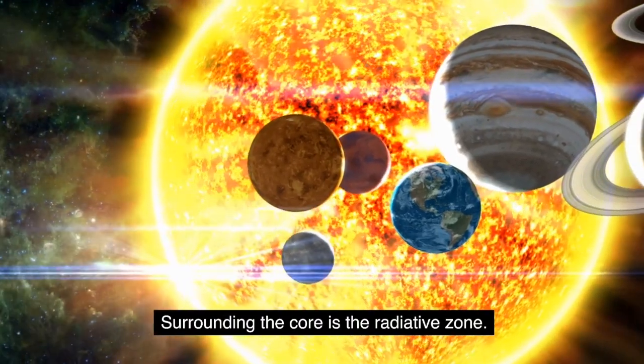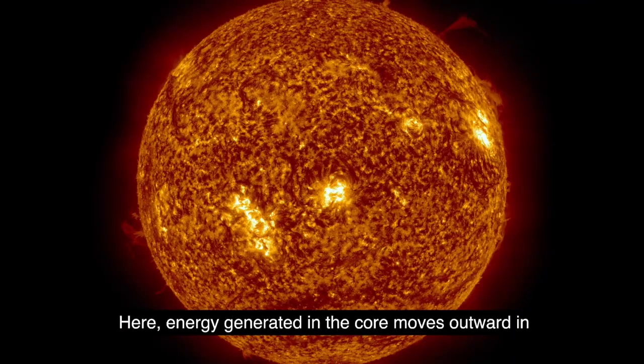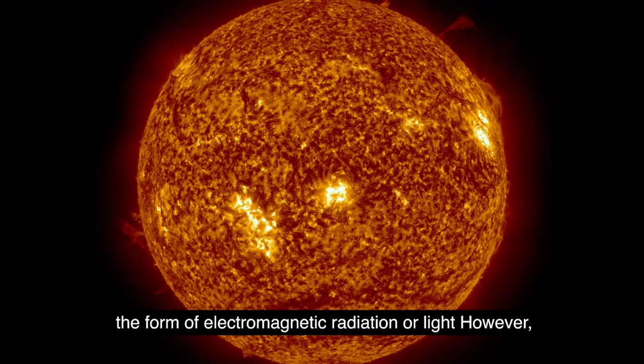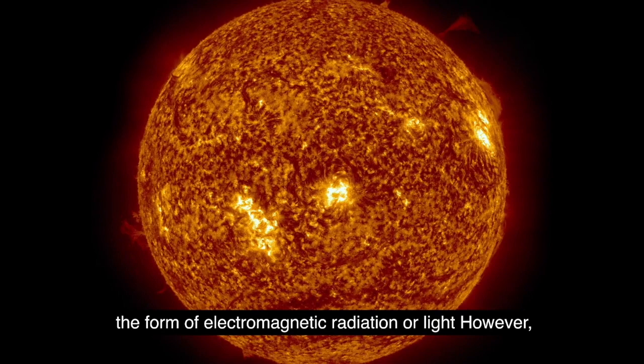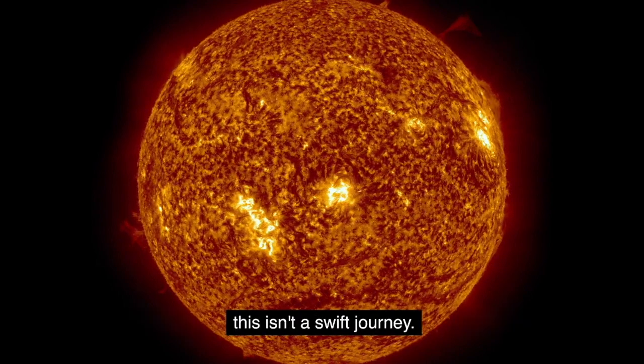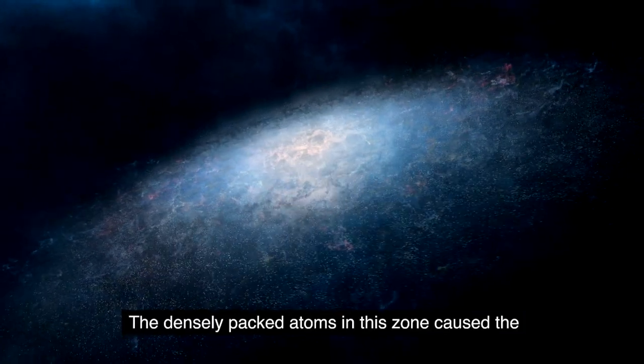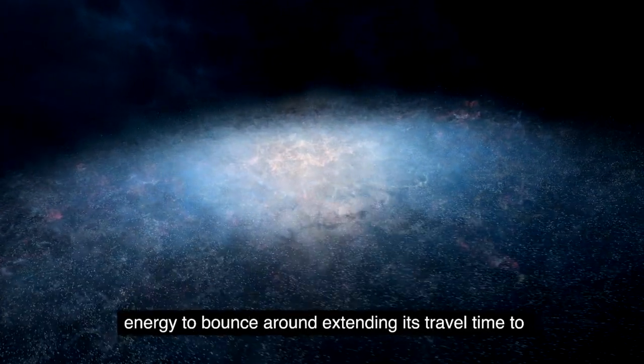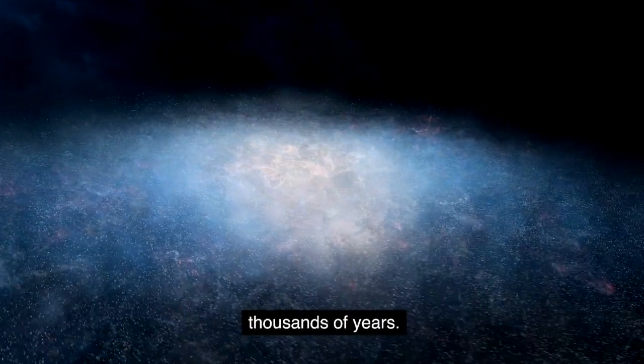Surrounding the core is the radiative zone. Here, energy generated in the core moves outward in the form of electromagnetic radiation or light. However, this isn't a swift journey. The densely packed atoms in this zone cause the energy to bounce around, extending its travel time to thousands of years.